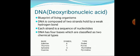DNA is a molecule made up of DNA chromosome and the blueprint of living organisms. DNA is composed of two strands held by a weak hydrogen bond in a sequence of nucleotides. The nucleotide is a linear sequence code. DNA has four bases which are classified as chemical types.